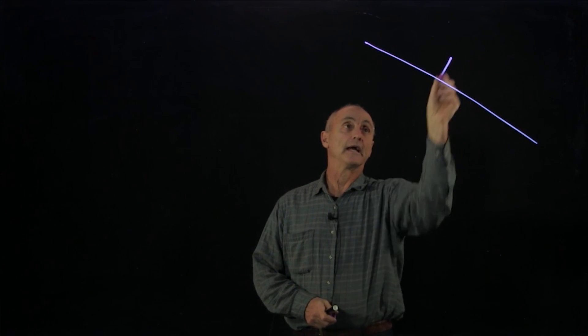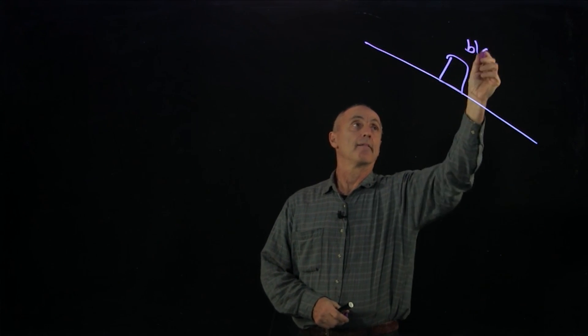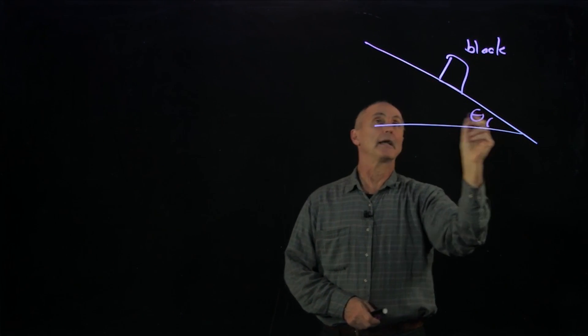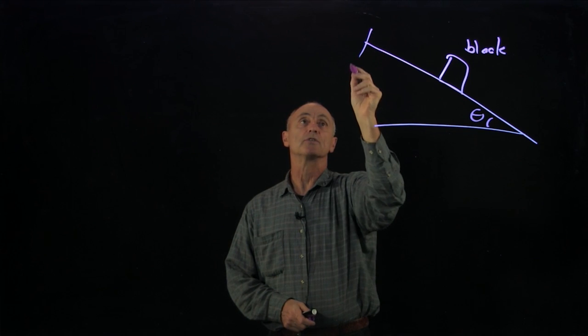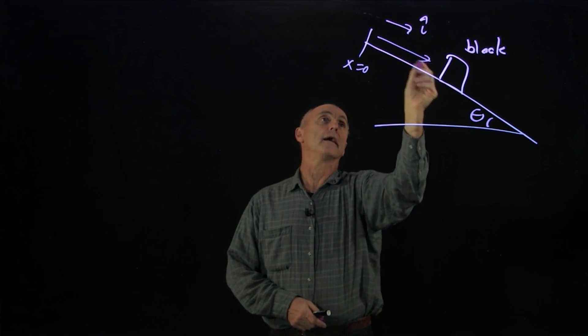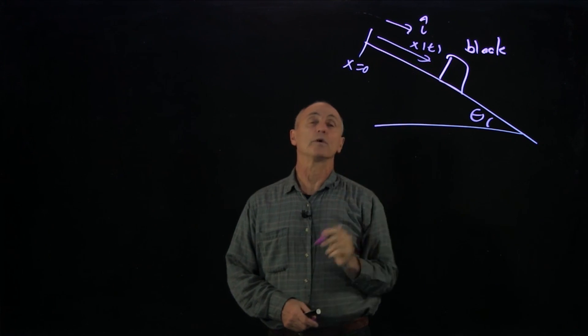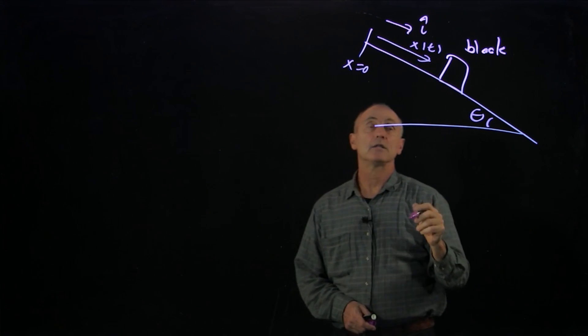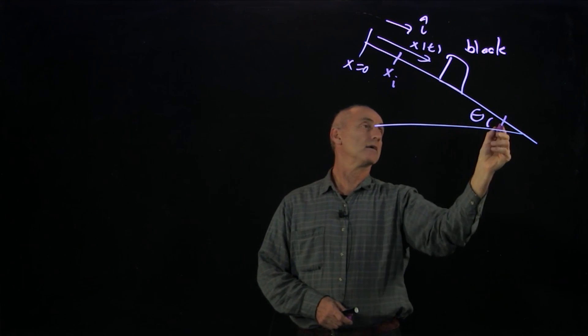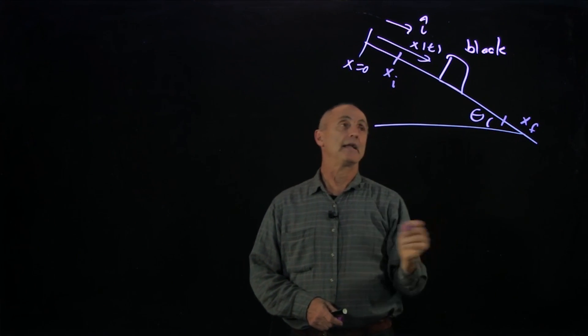Let's apply the work energy theorem principle to the motion of a block sliding down an inclined plane. And here's an inclined plane at an angle theta. And let's choose a coordinate system. We'll choose x equals 0 up here, i hat here, and here is our coordinate function. And suppose that the object starts at xi and it ends at x final.